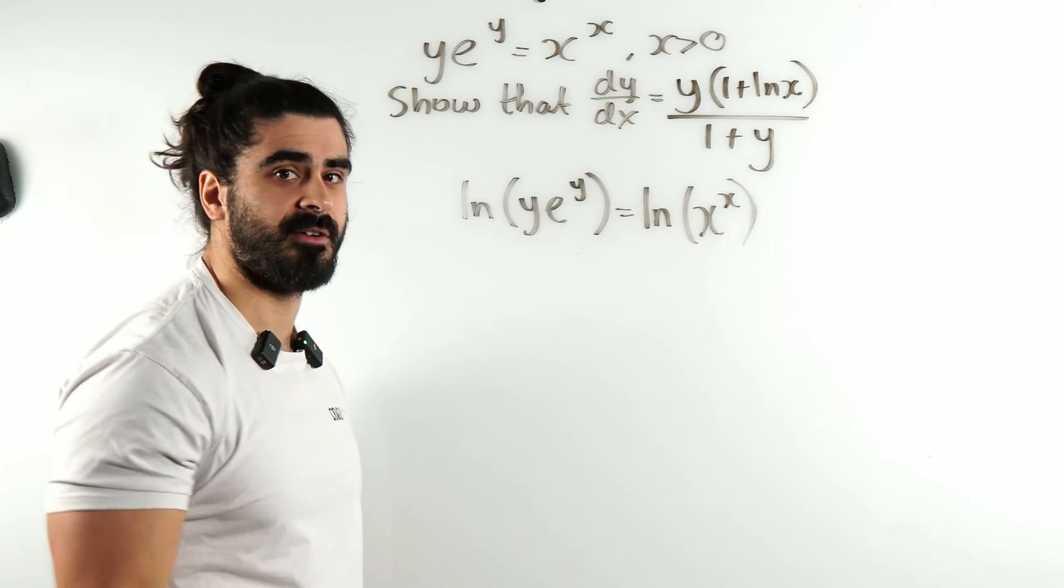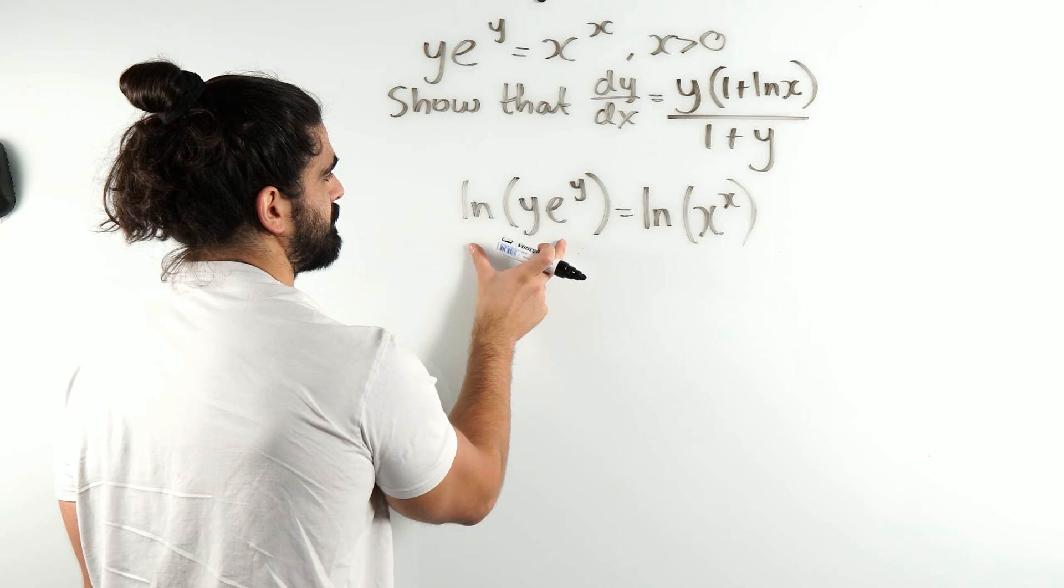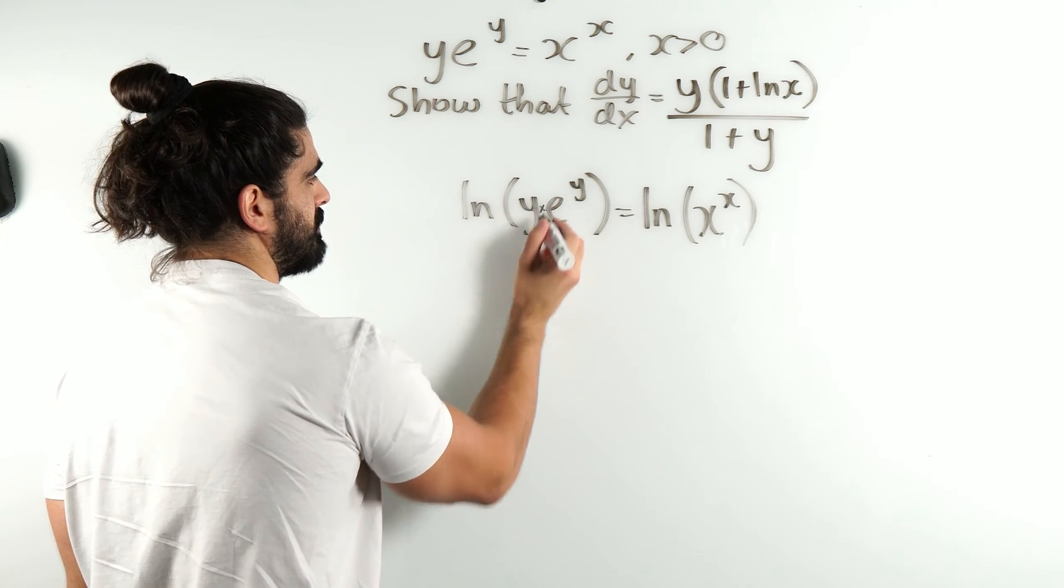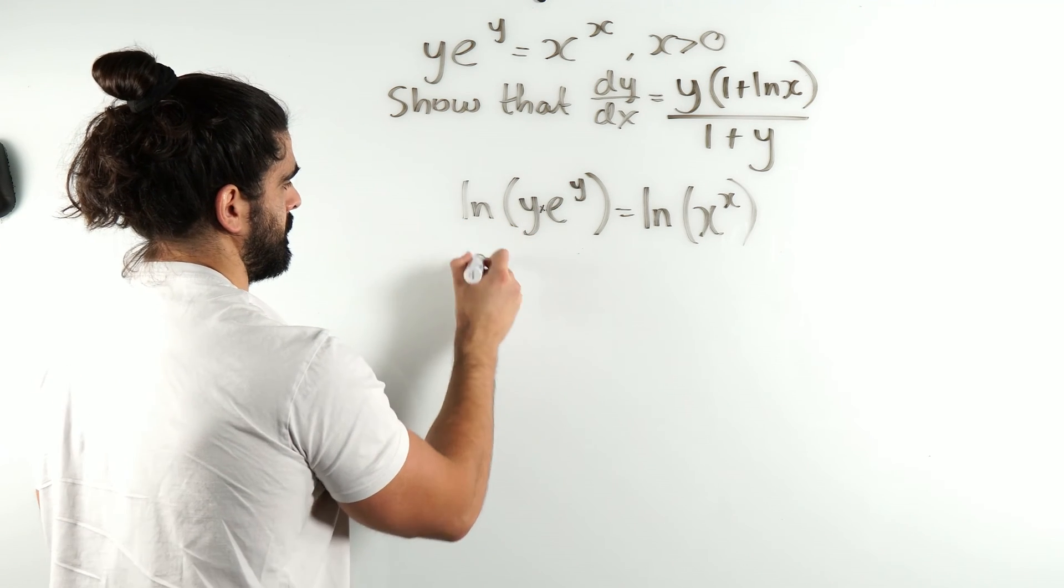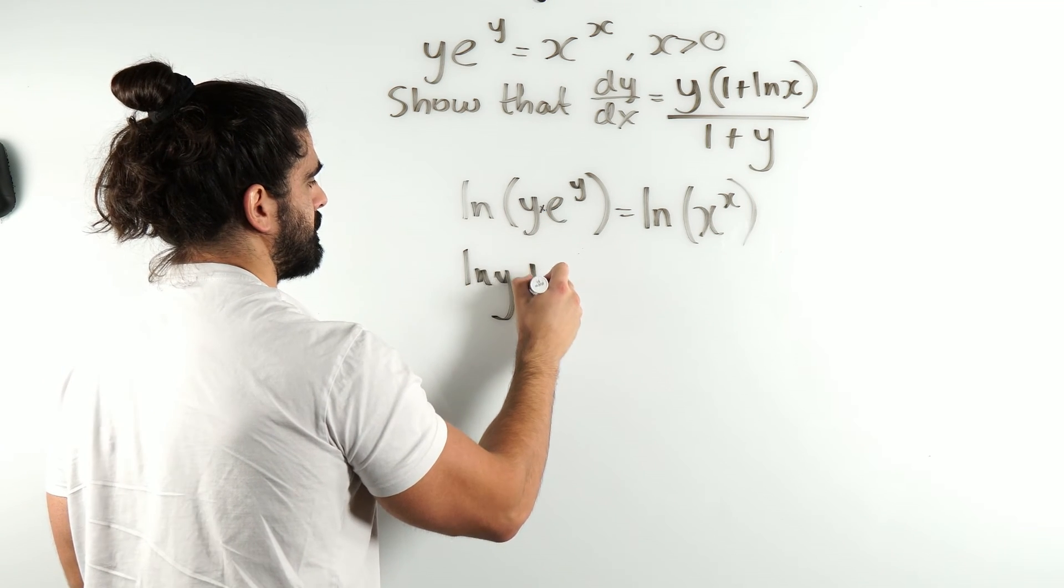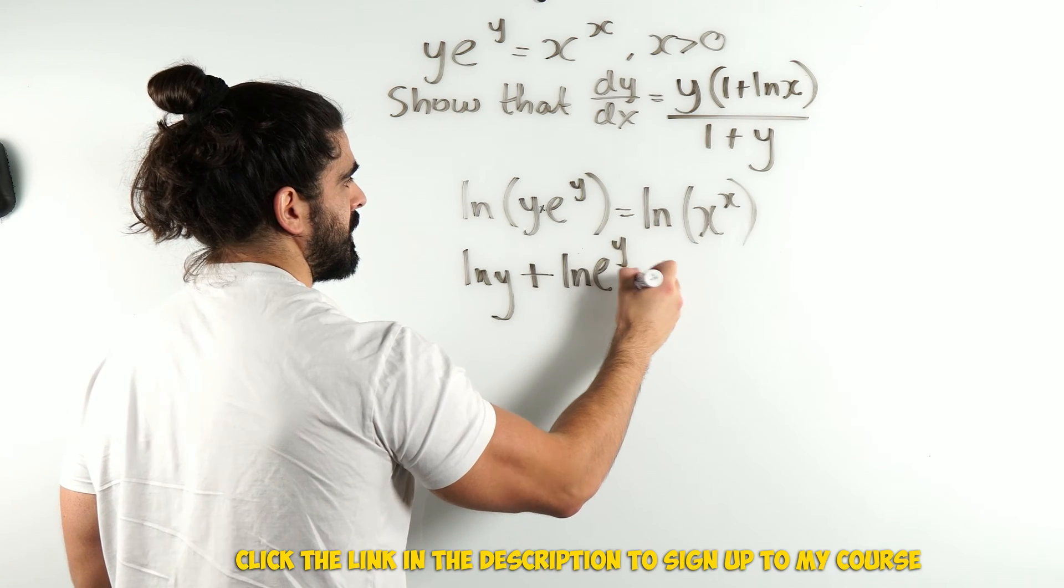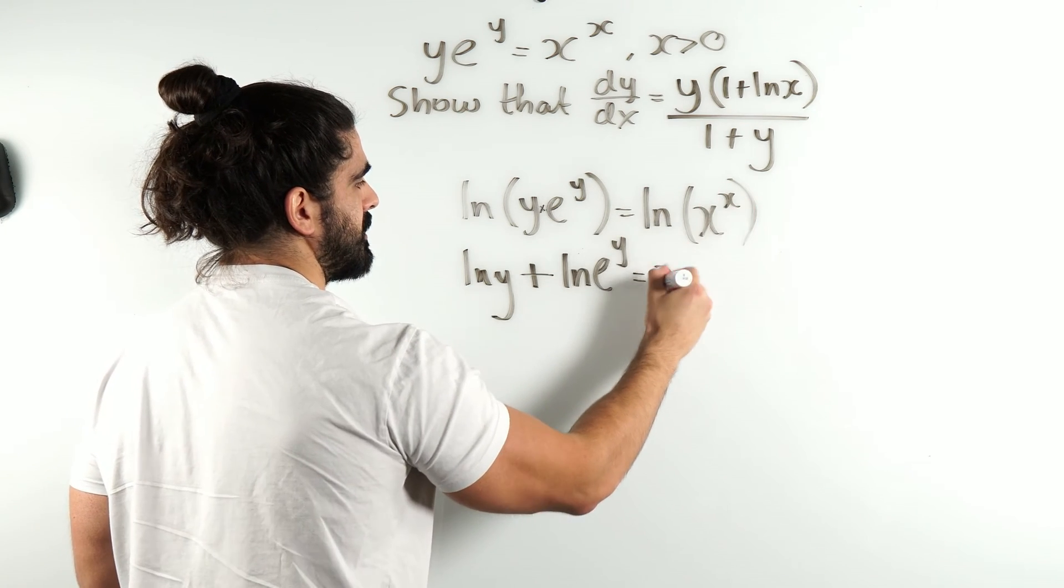We don't know how to differentiate x to the x as is. Here, we can split the ln because this is multiplication. We get ln(y), then the multiplication side becomes plus ln of e to the y. Here, we just bring down the x.